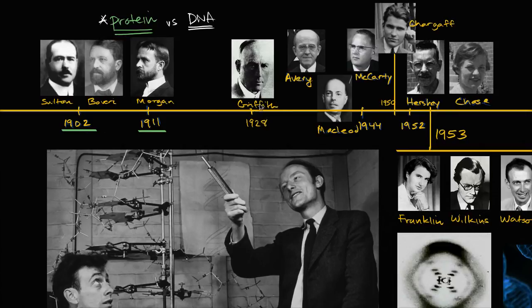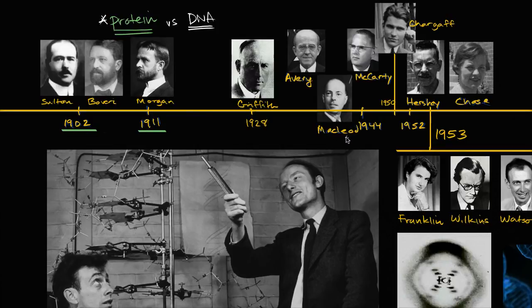But then more and more evidence came on the DNA side. You had Griffith's experiment, where he was able to show that he could take heat-killed bacteria, and if mixed with some other living bacteria, there's some transformation principle that transforms the living bacteria into the type of species from the heat-killed. Then in 1944, Avery, McCarty, and MacLeod were able to show pretty good evidence that the actual principle — the thing left in that heat-killed bacteria — was probably DNA.